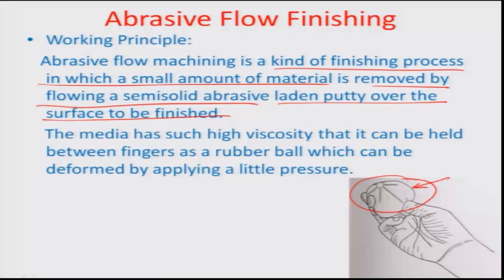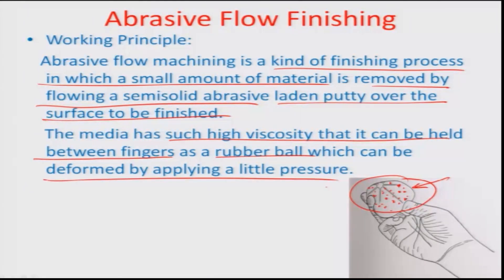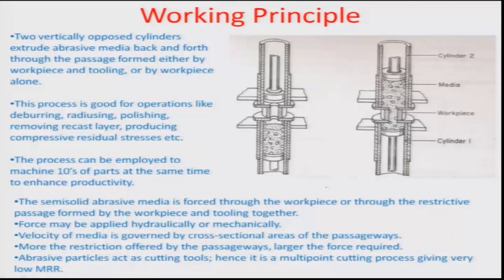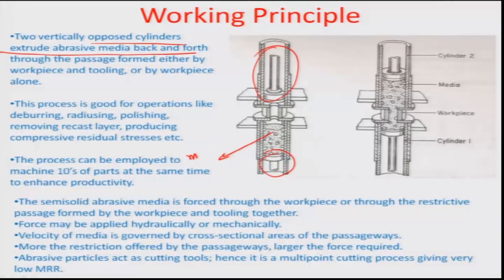The medium can be under pressure, expanded and contracted, and can change shape. The basic idea is to deploy this medium within contours where you want to do finish machining, particularly on internal surfaces. The media has such high viscosity that it can be held between fingers, like a rubber ball that deforms with a little pressure. The machining is carried out using two vertically opposed cylinders which extrude the abrasive medium back and forth — one cylinder with a plunger on the upper side and one on the bottom.